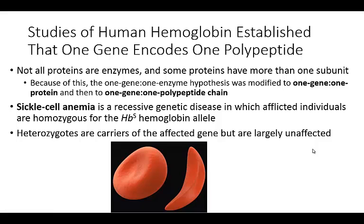Other studies, in particular studies of human hemoglobin, established that one gene encodes one polypeptide — a more specific statement than one gene, one enzyme. The reason for this refinement is that not all proteins are enzymes; some proteins have other important functions. Also, some proteins have more than one subunit. So the hypothesis was modified and is now called the one-gene, one-polypeptide chain hypothesis.